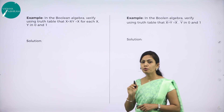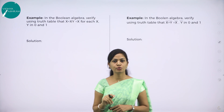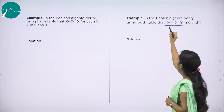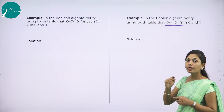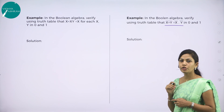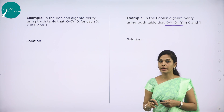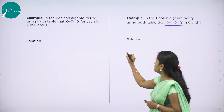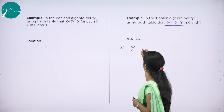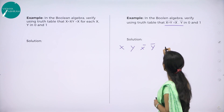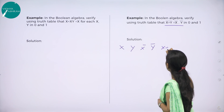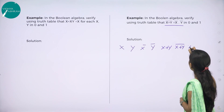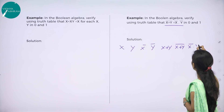I will give one more example. In Boolean algebra, verify using the truth table that (x + y)-bar equals x-bar dot y-bar. The first step is to list all the variables: x, y, x-bar, y-bar, x+y, (x+y)-bar, and x-bar dot y-bar.